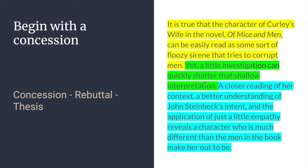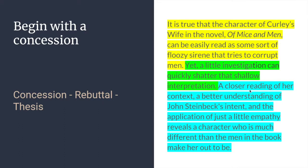The rebuttal is: 'Yet a little investigation can quickly shatter that shallow interpretation.' So I start with a concession, giving in, saying of course you're right — but then I give a rebuttal and say, actually, if we read deeper, you find out you're incredibly wrong. Then I give the reasons: 'A closer reading of her context, a better understanding of John Steinbeck's intent, and the application of just a little empathy reveal a character who is much different than the men in the book make her out to be.' I've included the text type, title, and author's name, and you can see all three major arguments for the body paragraphs.